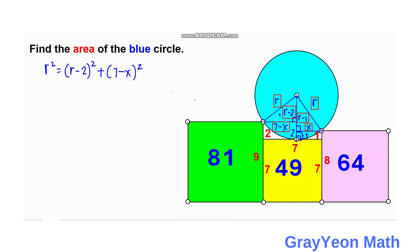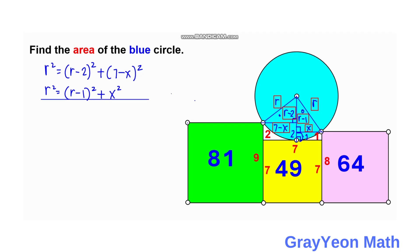For the second equation, we have r squared equals (r minus 1) squared plus x squared. So we now have a system of two equations that we need to solve for r.